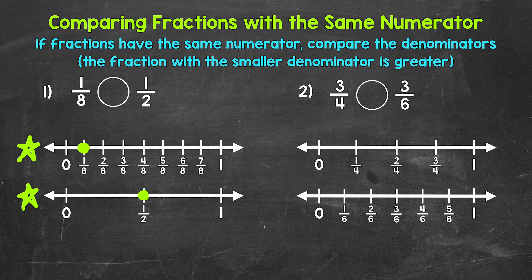Now remember, the comparison symbol always opens up towards whatever is greater. So our symbol goes like this, and we can read this comparison from left to right as one eighth is less than one half. Let's move on to number two, where we have three fourths and three sixths. So is three fourths greater than, less than, or equal to three sixths?